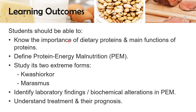The learning outcomes are: importance of dietary proteins, main functions of proteins. You will be able to define protein energy malnutrition (PEM) and study its two extreme forms, Kwashiorkor and Marasmus. You will identify laboratory findings, biochemical alterations in PEM, and understand the main features of treatment and their prognosis.